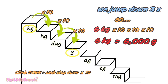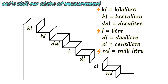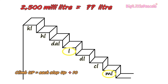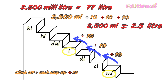Now let's convert milliliters to liters. Going back to our stairs of measurement, let's convert 2500 milliliters to liters. Find the milliliter on the stair, then find the liter. Jump up from milliliter to liter — each step up, divide by 10. That's 1, 2, and 3 jumps.